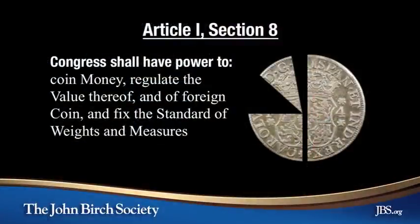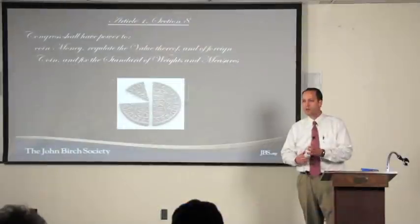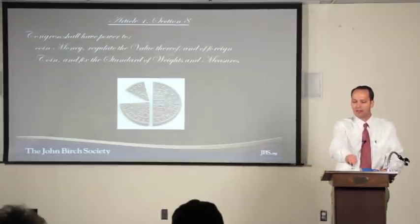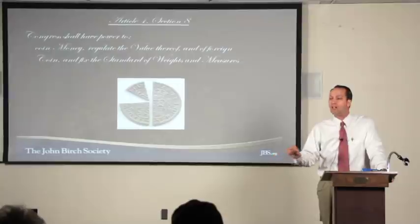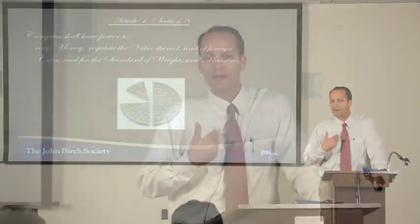The 'coin money' power meant Congress established mints around the country. We could bring in gold and silver bullion and they would turn it into official U.S. coins. They put very stiff penalties on this: if workers in the U.S. Mint were caught skimping on the silver or gold content of a coin, or if a counterfeiter made fraudulent coins, the penalty for both crimes would be death. They took the protection of the value of our money very seriously.